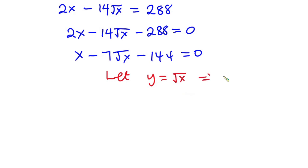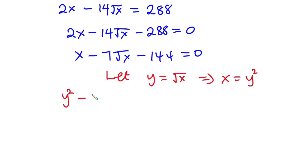From here, let's say y equals square root of x, which implies that x equals y squared. So this equation becomes y squared minus 7y minus 144 equals zero.